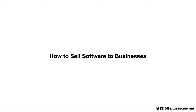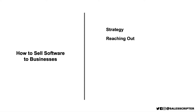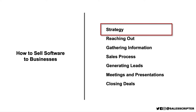In this video, we're going to talk about how to sell software to businesses. This is a very big subject, and we're going to really dive in and go through our recommendations for how to do this step by step. There's a lot to talk about, so we're actually going to break this out across multiple videos: the strategy, reaching out, gathering information, sales process, generating leads, meetings and presentations, and then we'll wrap up with closing deals. So let's start out by talking about creating a strategy that increases your odds for success.